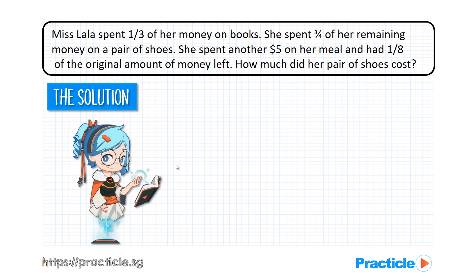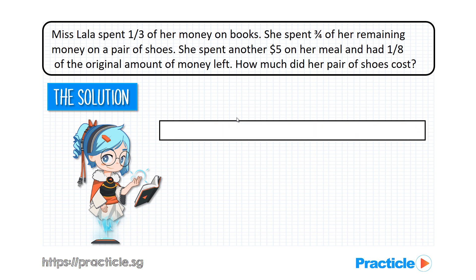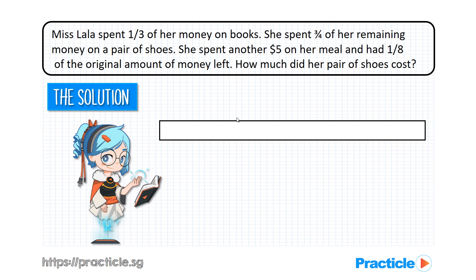Now it's time to solve the question. As usual, we'll start with what we know, and draw the model for this problem sum to help us see what is going on. Miss Lala spent one-third of her money on books. This means she spent one unit out of a total of three units on books. So if this model represents all the money she had, we divide it into three portions, and one portion is spent on books.